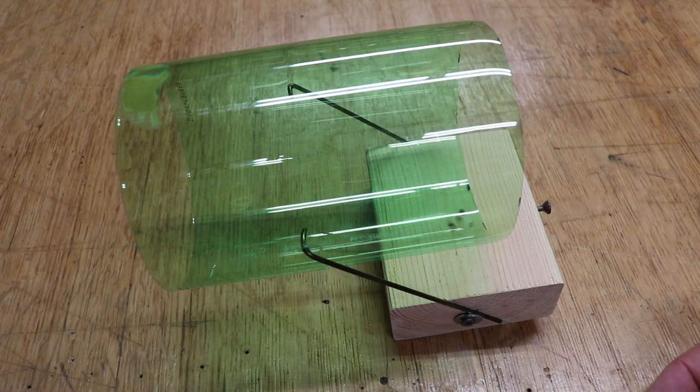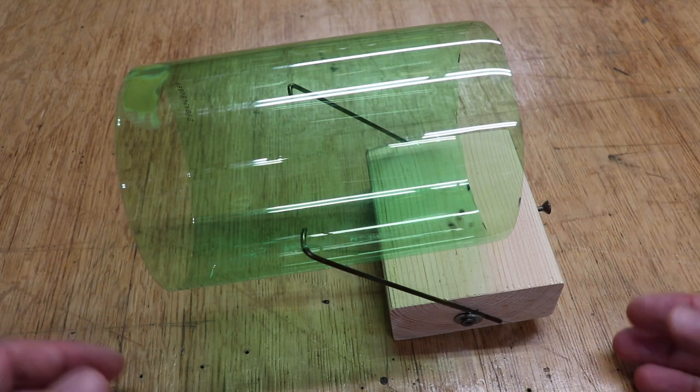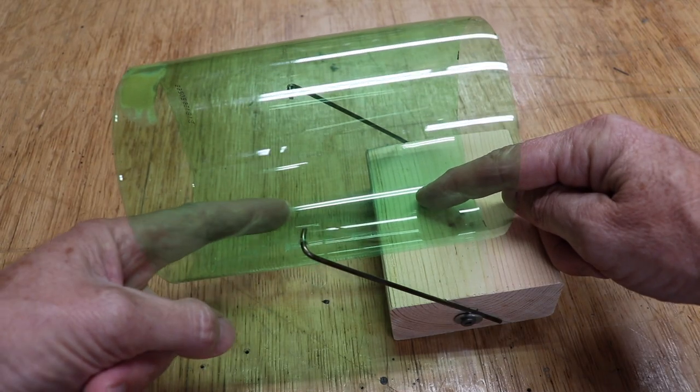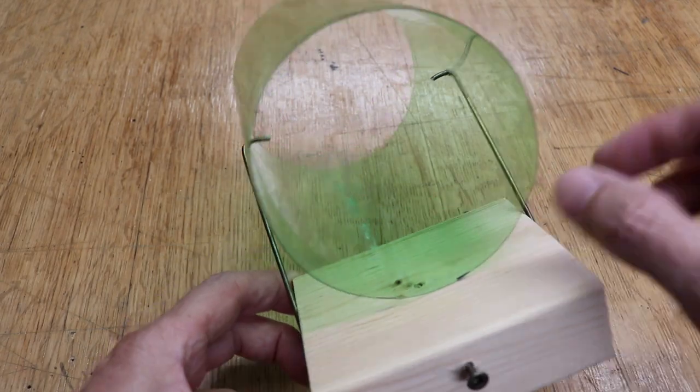So as you can see this trap doesn't just catch one mouse, but it catches multiple mice. It's self-resetting. He climbs across here and once he gets across here because he smells the peanut butter which is inside the top of the tube there,